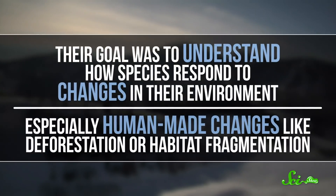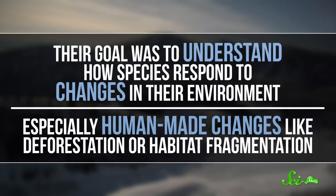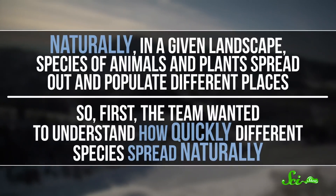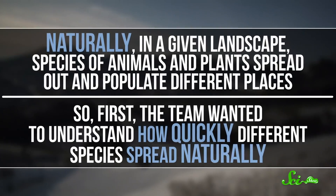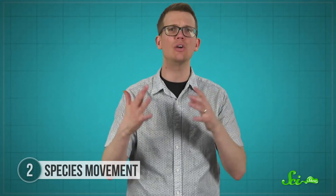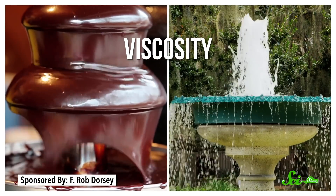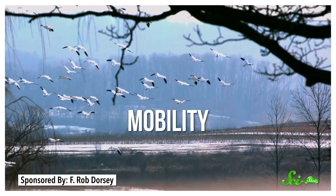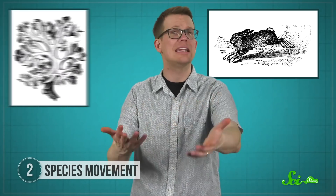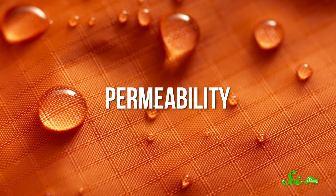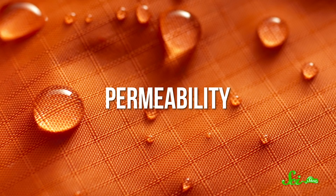The researchers especially focused on human-made changes like deforestation or habitat fragmentation. In a given landscape, species of animals and plants spread out and populate different places. The team wanted to understand how quickly different species spread naturally, so they created a model using equations that describe how a fluid moves through a porous material, like a sponge. In fluid flow, the viscosity of a fluid tells you how resistant it is to flow. Species have an analogous property called mobility, which measures how readily they disperse — you wouldn't expect rabbits to spread at the same speed as a lichen. Their model also uses permeability, which describes how readily a material lets fluids move through it, to work out how permeable a landscape is to different species flowing through it.